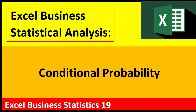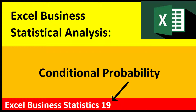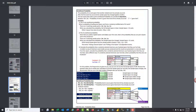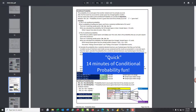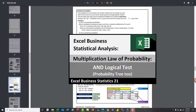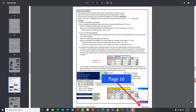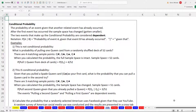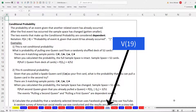Welcome to Excel Business Statistical Analysis, video 19. In this video, we're going to talk about conditional probability. This is just a quick introductory video on conditional probability, which we'll use much more extensively when we get to the multiplication law of probability. Page 16 in our PDF notes has the notes and the three examples we're going to do. If we jump over to our Excel file, we'll check out these notes and do the examples on sheet V19.